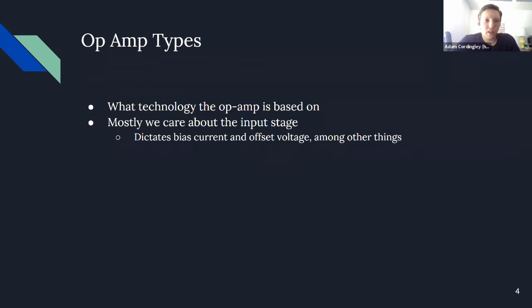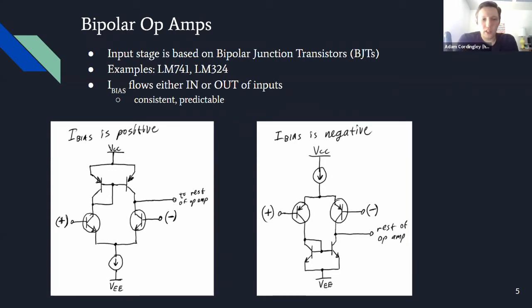This brings us to discussing op amp types. We're mostly interested in the technology the op amp is using on the inside, and one of the big things we care about is the input stage. The earliest type of op amp was the bipolar op amp using BJTs. Some examples are the old LM741 and the industry-standard LM324.